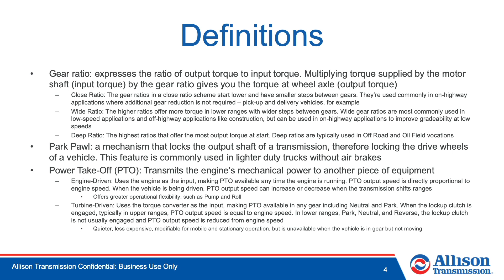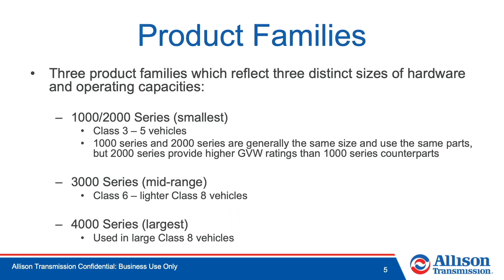There are three product families that reflect three distinct sizes of hardware and operating capacities. The first family is the 1000-2000 series — the smallest family, generally used for class 3 through 5 vehicles. The 1000 and 2000 series are generally the same size and use the same parts, but the 2000 series provides higher GVW ratings than their 1000 series counterparts. The 3000 series is the mid-range family, generally used in class 6 through lighter class 8 vehicles. The 4000 series is the largest on-highway transmission series and is used in large class 8 vehicles.